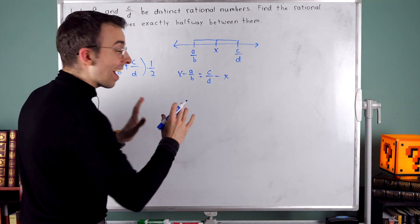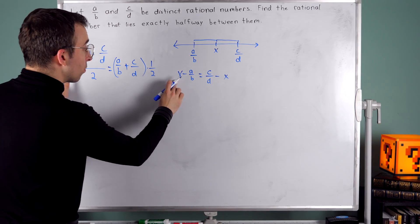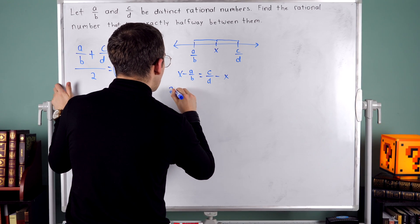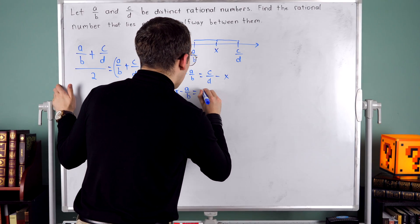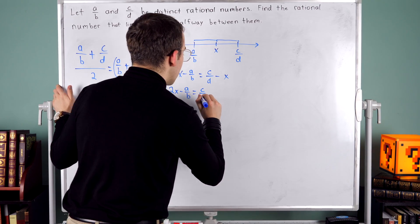Then on the left, since I add x, instead of just one x, I'll have two x's. So on the left, I have two x minus A over B. And on the right, I just have C over D.